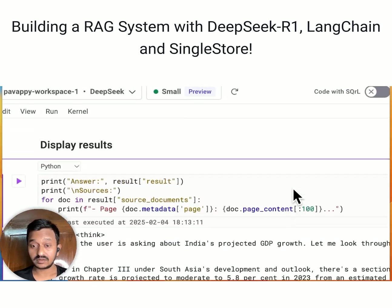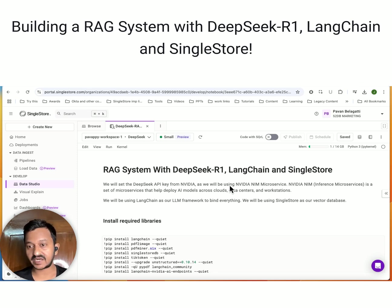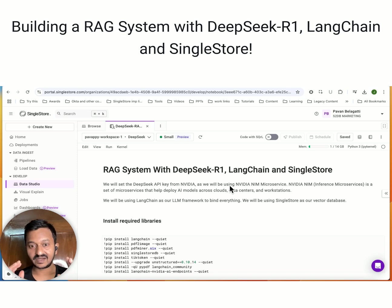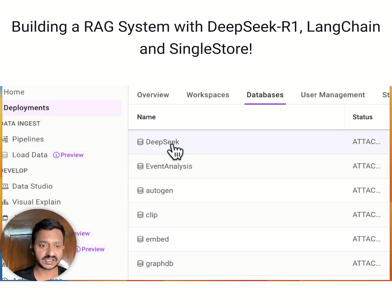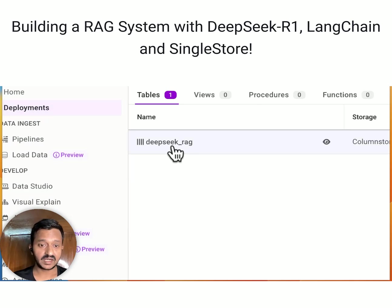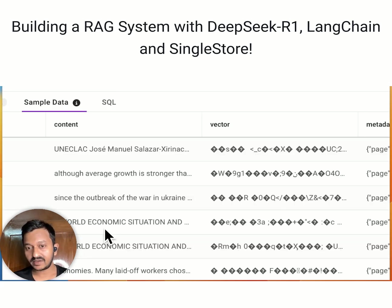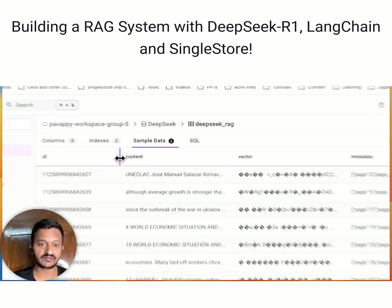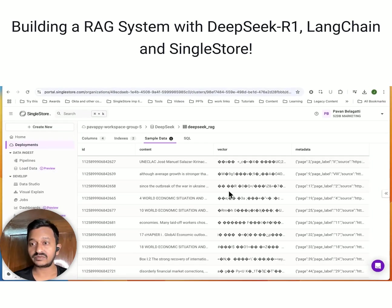This is how the whole RAG system works using DeepSeek R1, LangChain, and SingleStore. Now let's go back and see how the data has been collected and stored in our vector database in vector format. Go to Deployments, Databases, and our database named DeepSeek, with the table named DeepSeek RAG. Looking at the sample data, all the content from our PDF has been stored in the format of ID, content, vector, and metadata. This is how the data is stored as vectors in SingleStore.